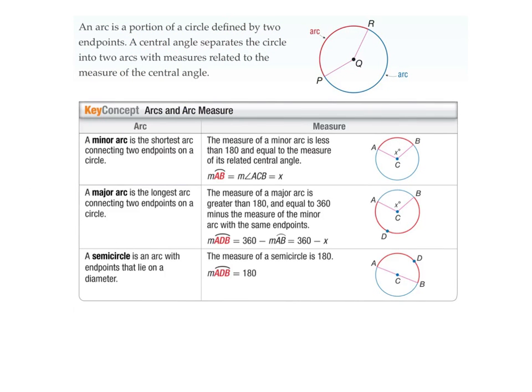So here's the names of your arcs. Minor arc. And as you see, it's less than 180 degrees. A major arc is greater than 180 degrees. And a semicircle is obviously 180 degrees. In other words, it's got to encompass the diameter, which is AB.